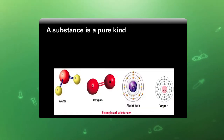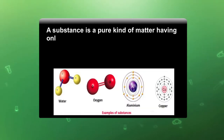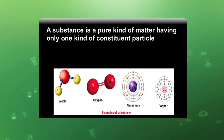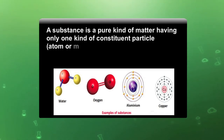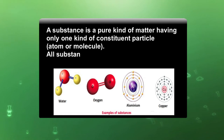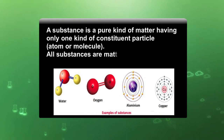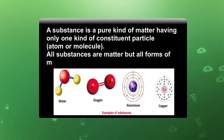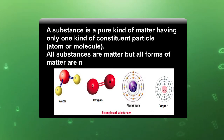A substance is a pure kind of matter having only one kind of constituent particles — either atoms or molecules. All substances are matter, but all forms of matter are not substances.